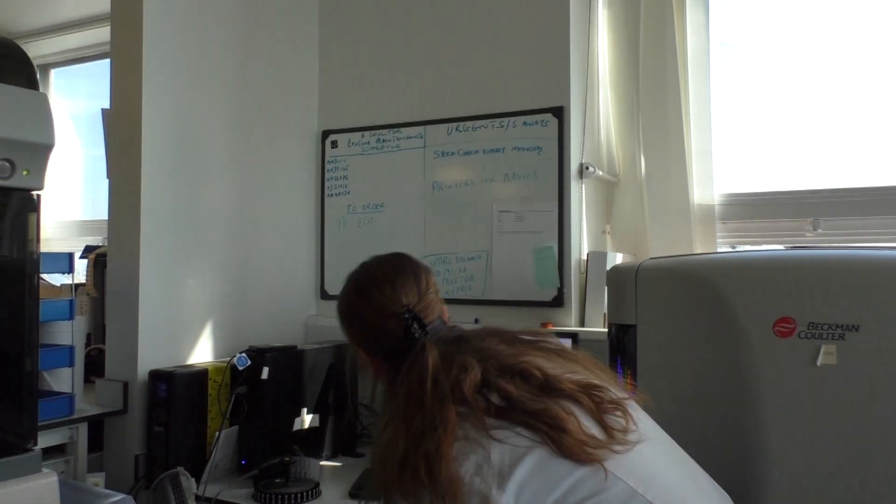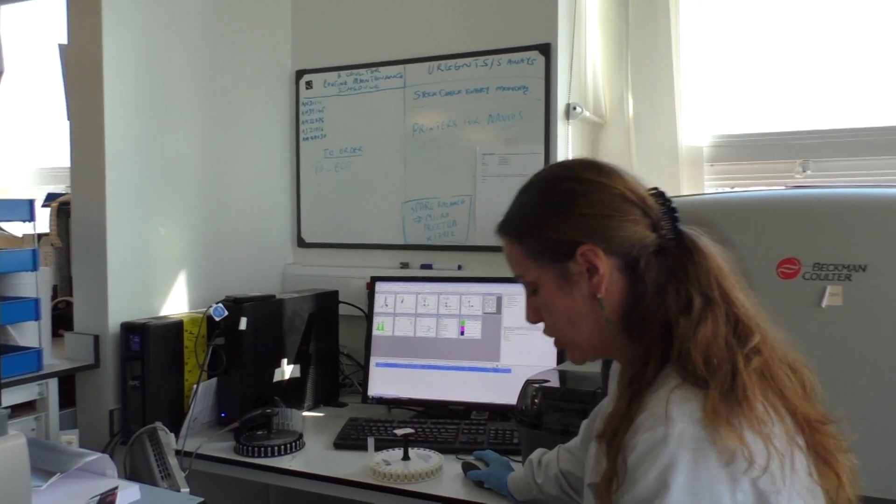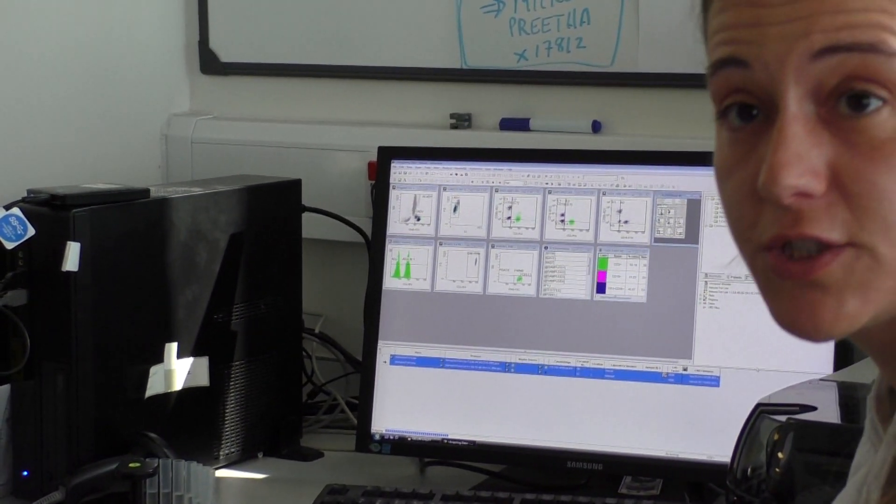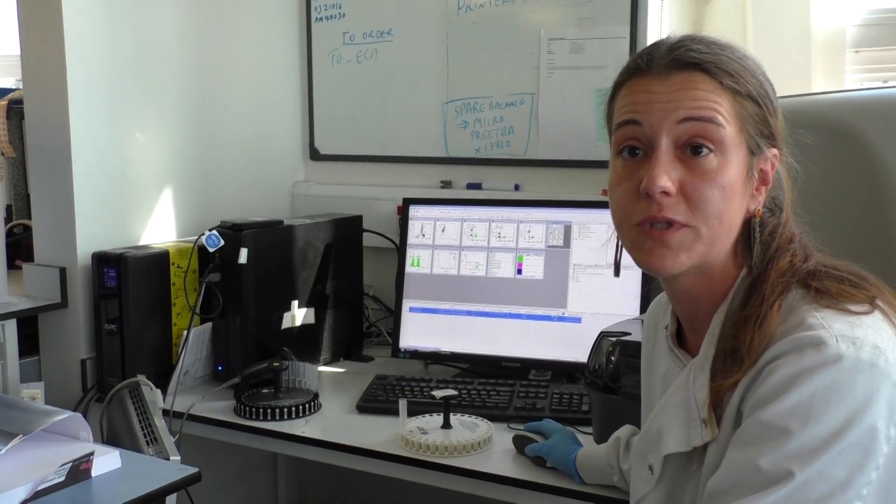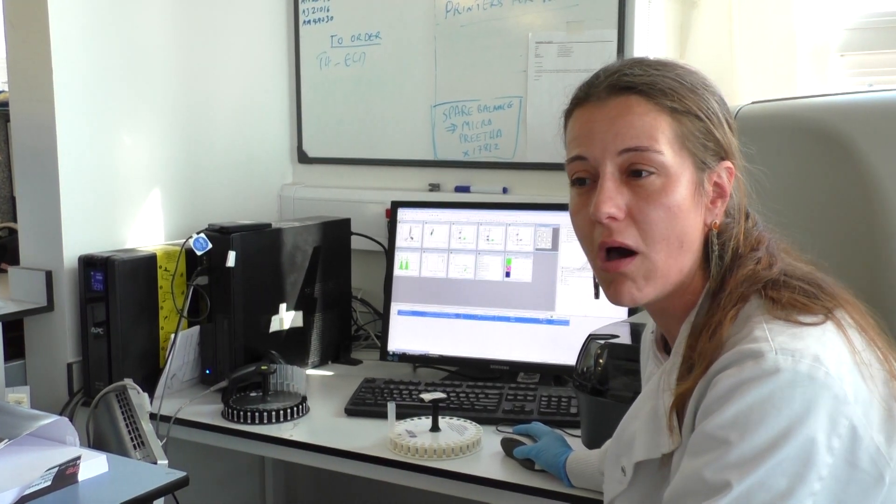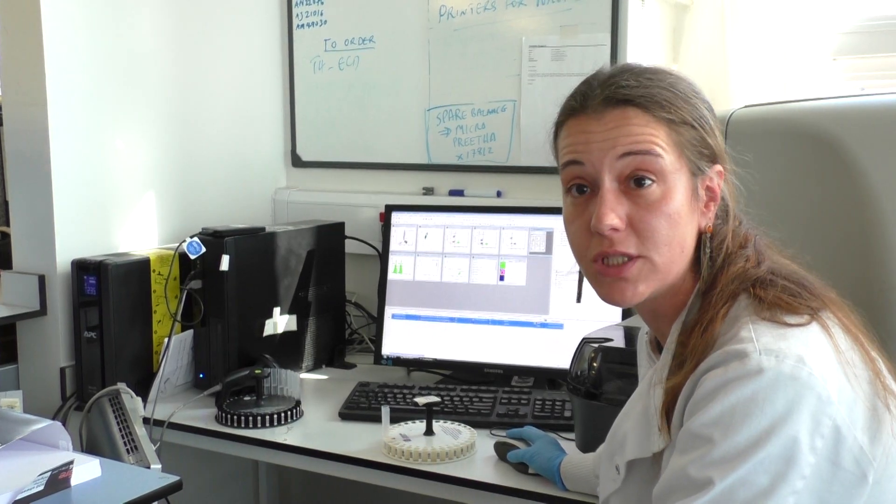In the flow cytometers we can actually choose what we're looking for. We can either look just for T lymphocytes - CD-4s and CD-8s - which is mainly what we do when we're looking for HIV patients.